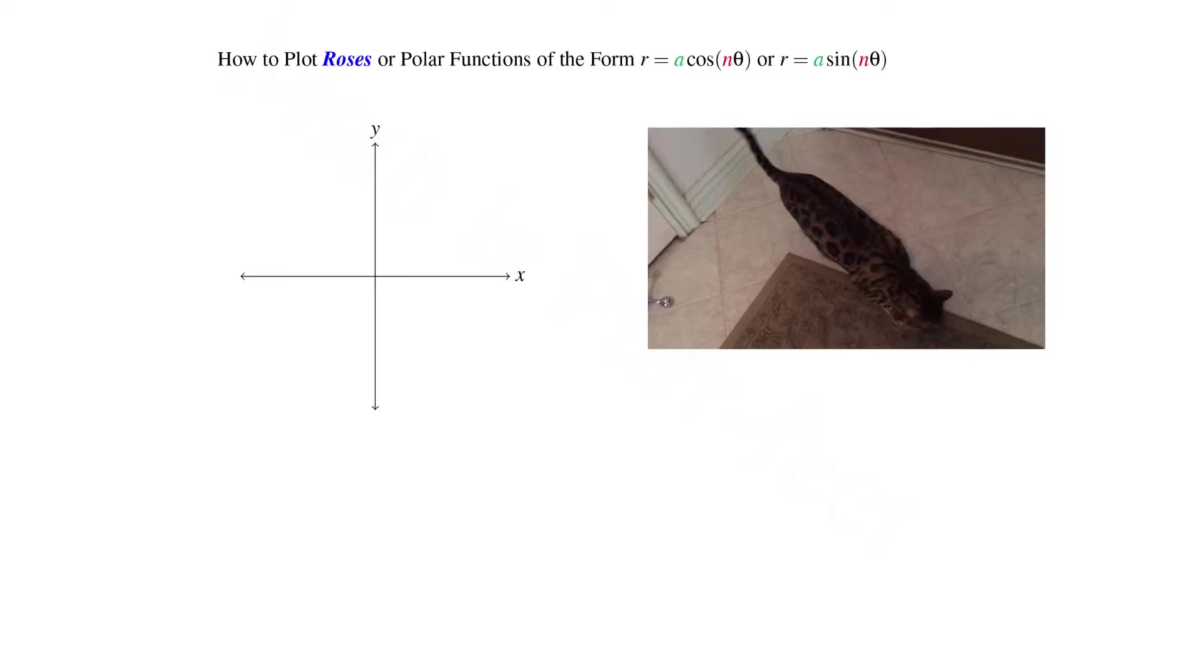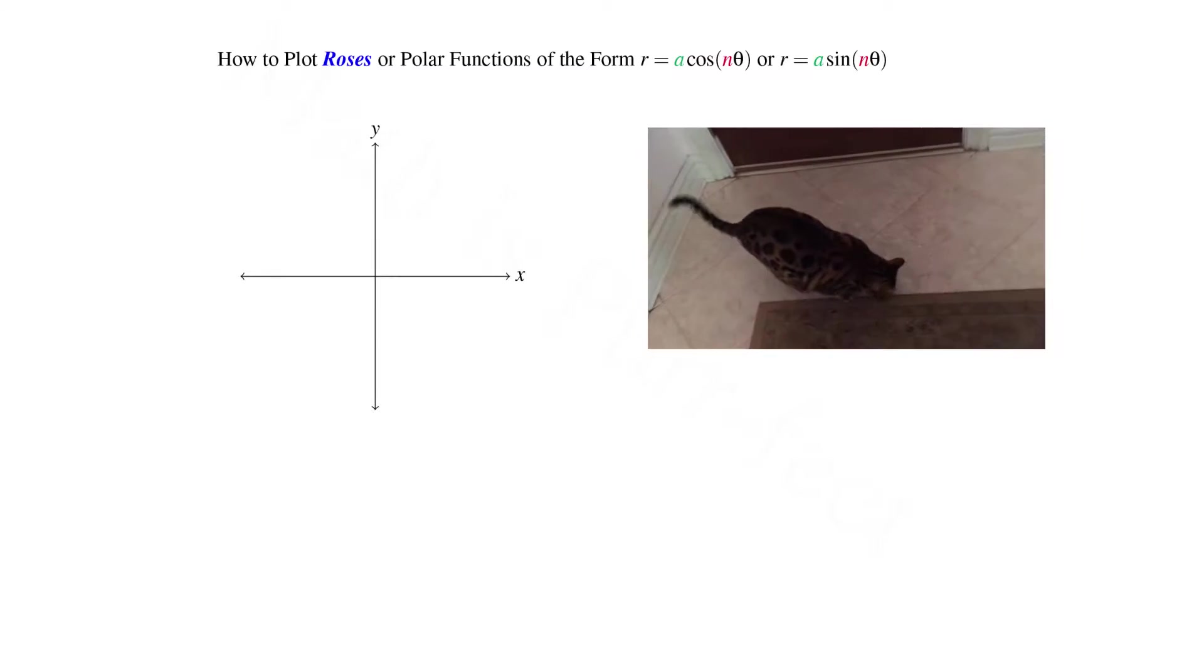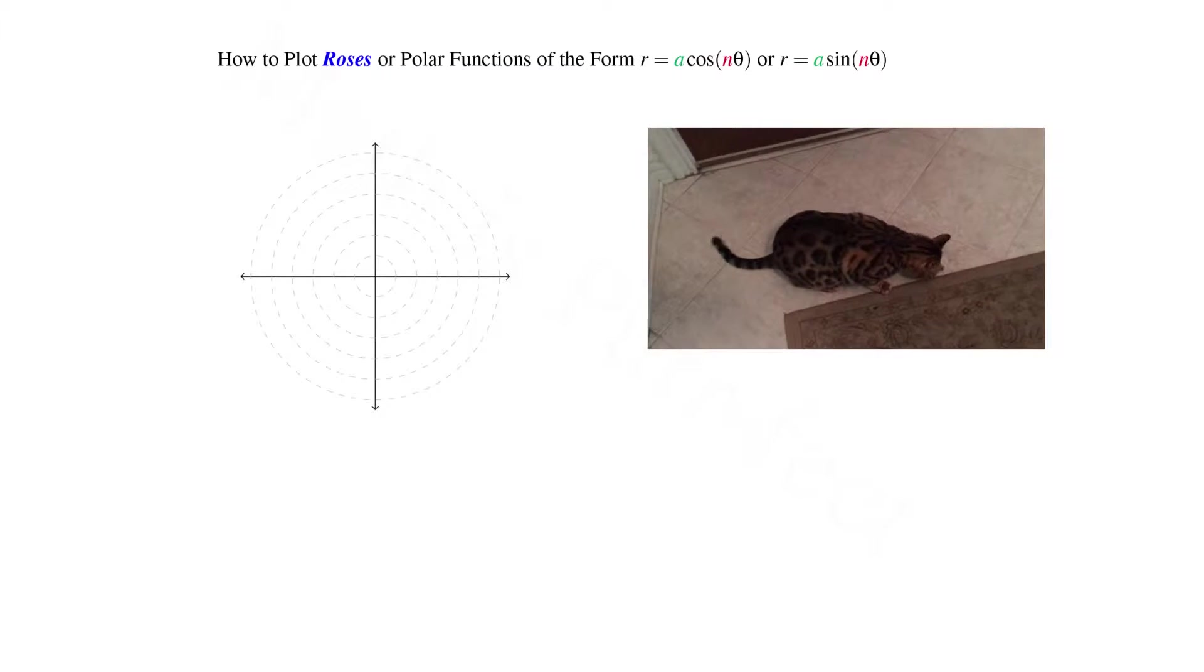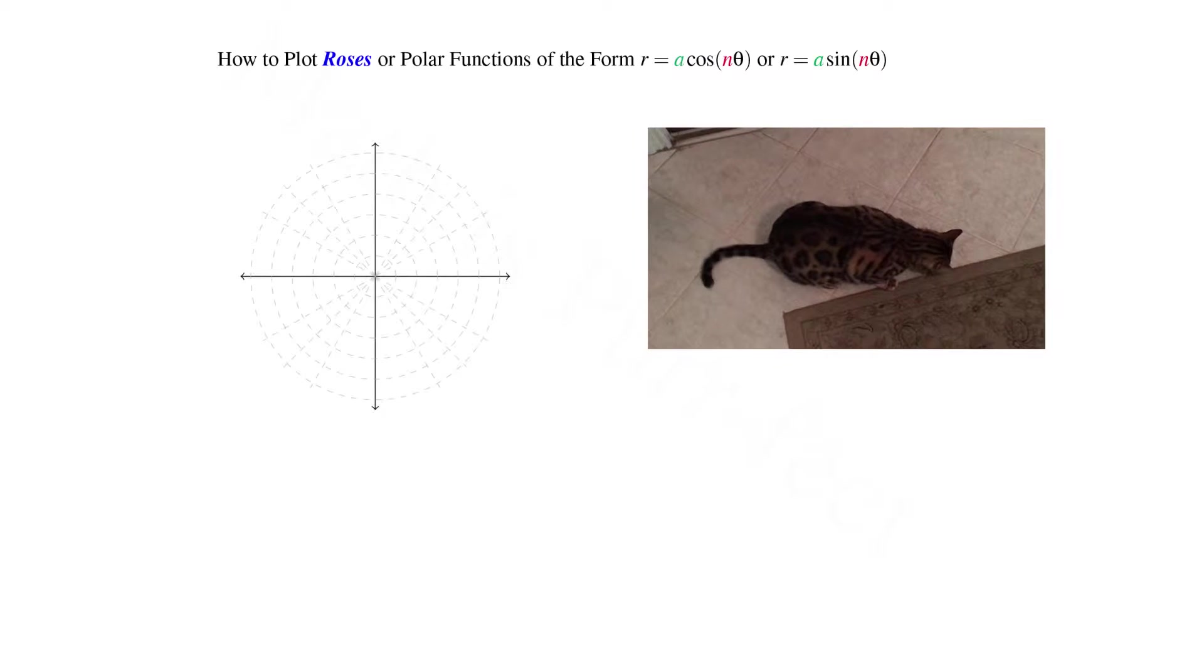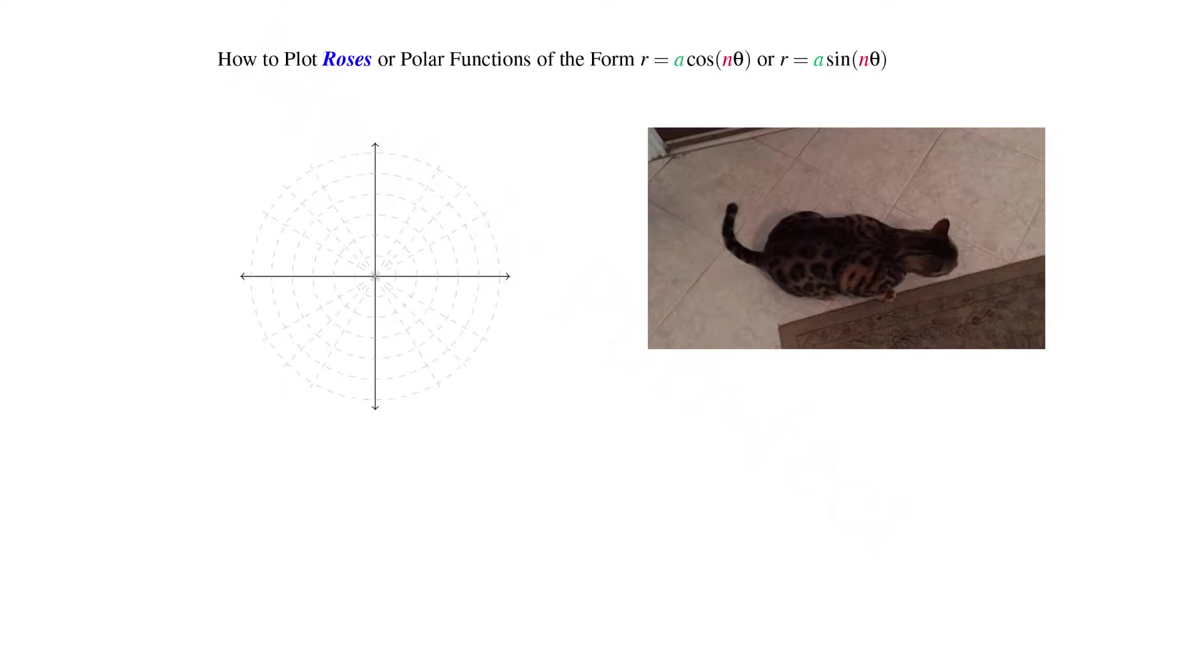Consider the rectangular coordinate system in X and Y. Let's first superimpose radii of integer magnitude from 1 to 6, followed by the angles listed on the unit circle.